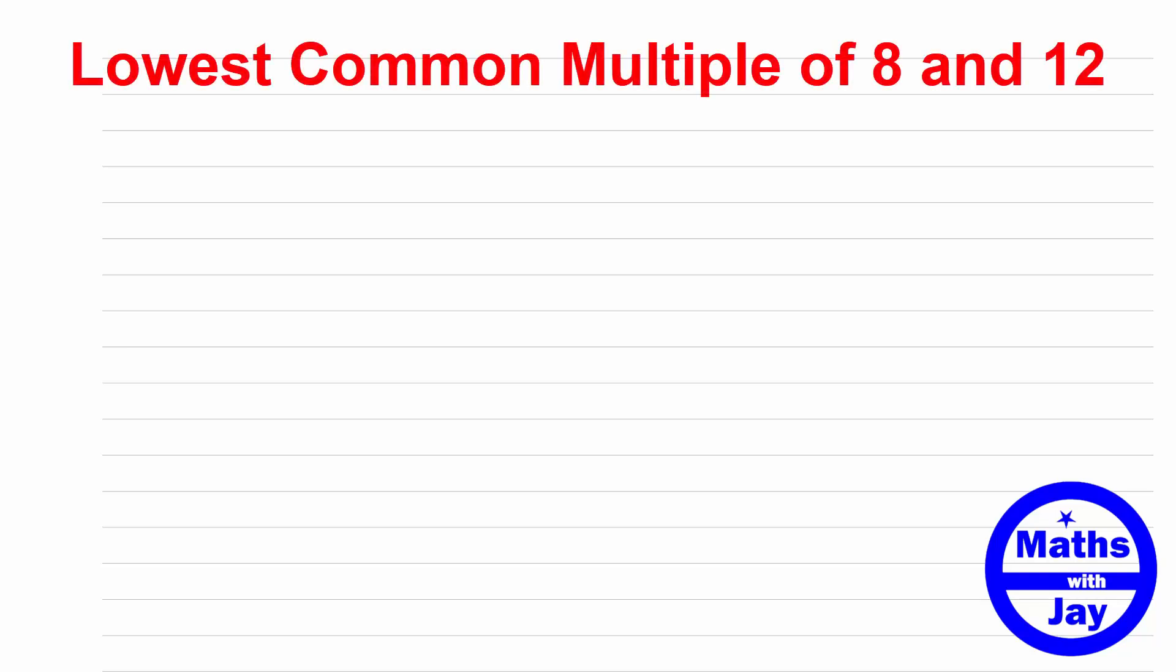We're going to look at an easy example of finding the lowest common multiple of two numbers and then we're going to have a look at an example where it's actually used. So we're going to find the lowest common multiple of 8 and 12.